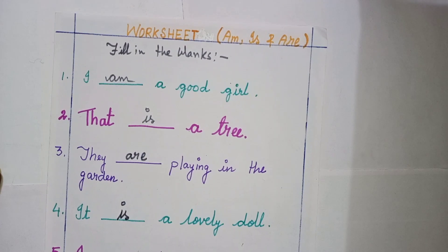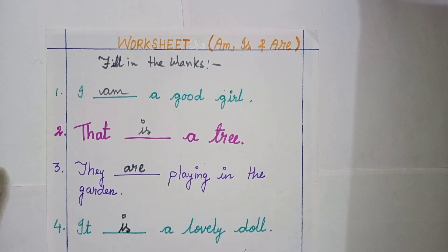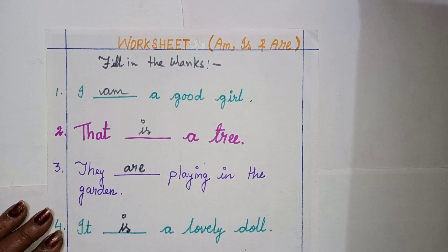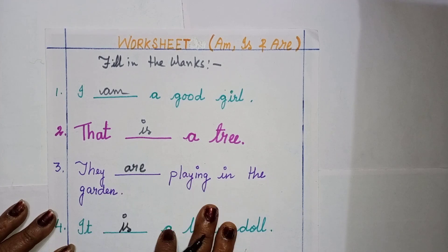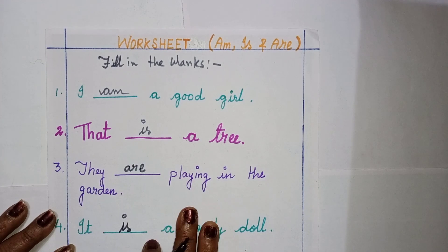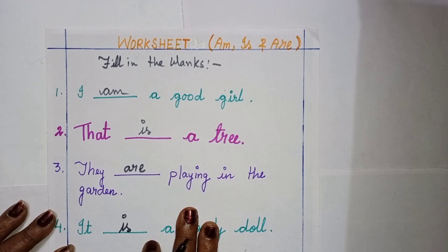This was a practice for you all, children, related to am, is, and are. I am giving you this worksheet — whatever is written, you will write it in your English copy and you will solve it. This one I have shown you as an example. My children, have a nice day. Bye bye.